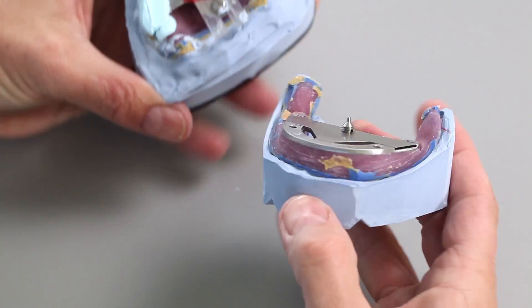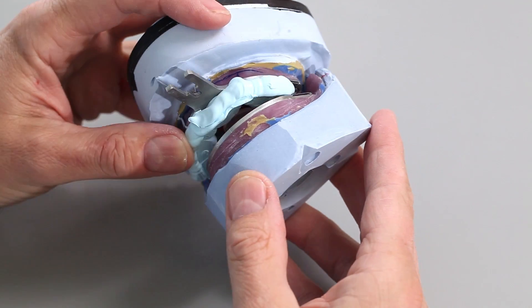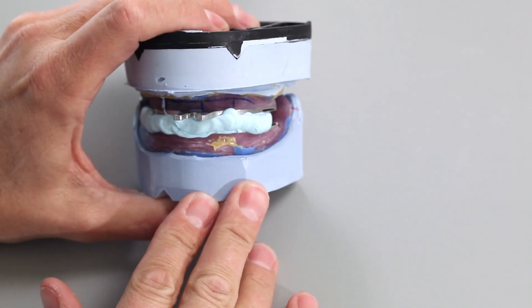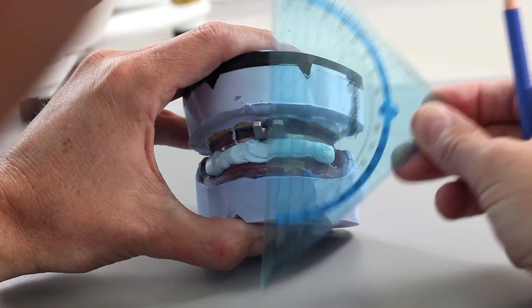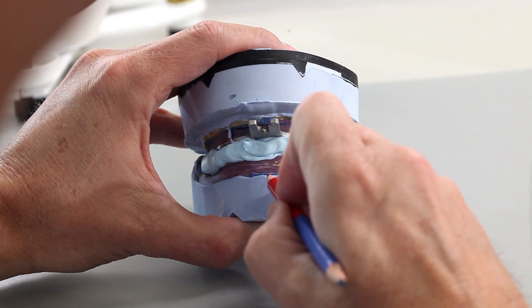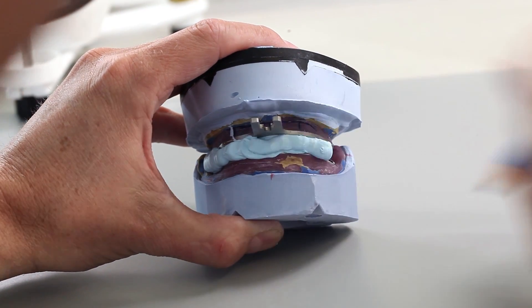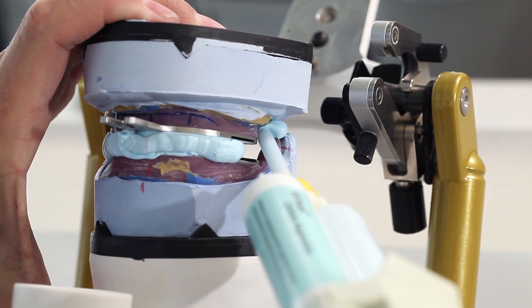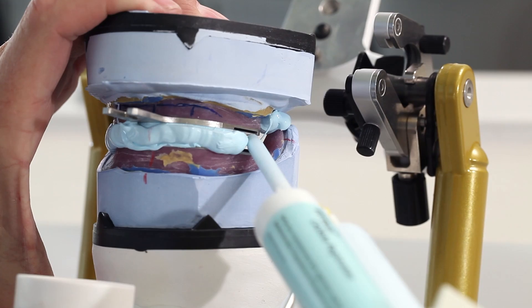Position the mandibular model with the support pin in centric position on the upper bike registration. Combine the models until the mandibular model contacts the silicone key. Transfer the aesthetic midline marked by the clinician to the mandibular model. If the models fit into the registration without any problem, secure them in this position.